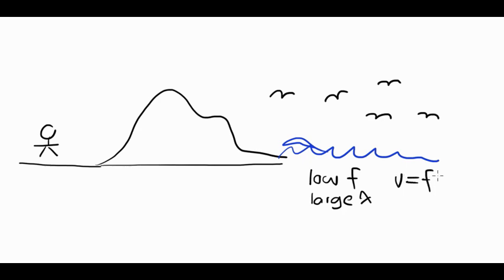Because V equals F lambda. And the velocity is fixed. Why? Because the velocity is the speed of sound. And the speed of sound, whether it be for the seagulls or for the ocean waves, will be the same through the air, assuming it's the same temperature and all that kind of stuff. So, the water waves have a low frequency, a low pitched sound, which means a large wavelength.